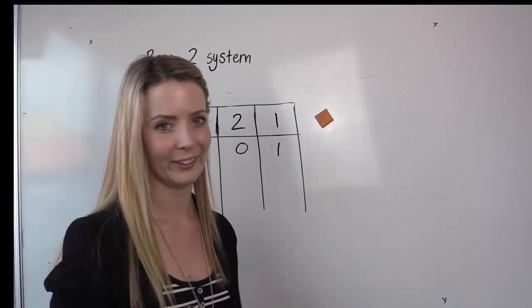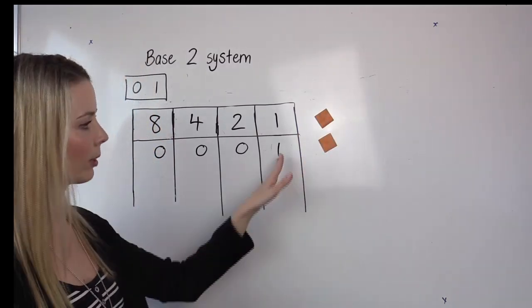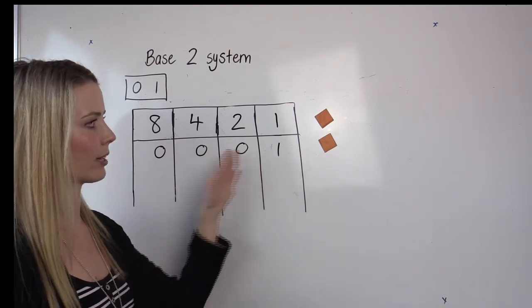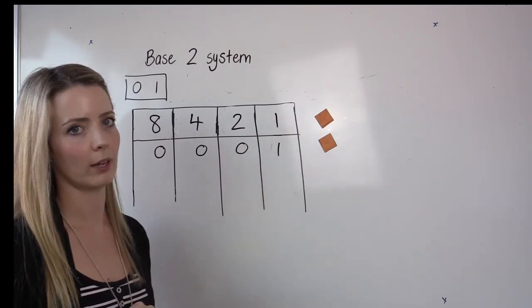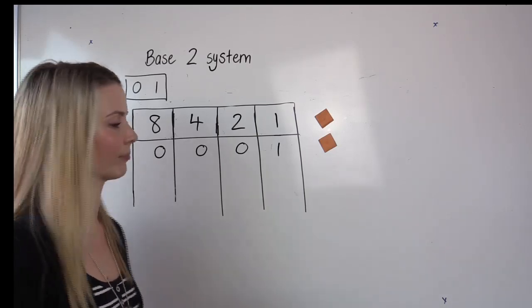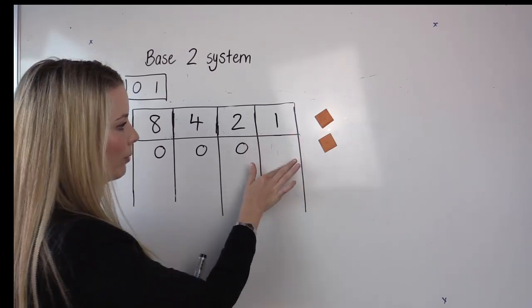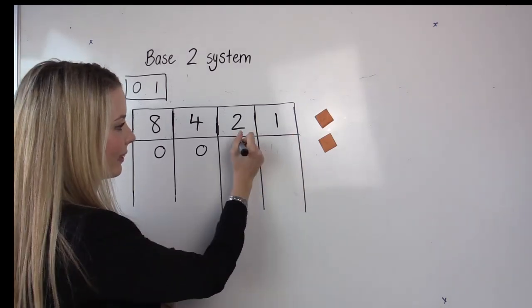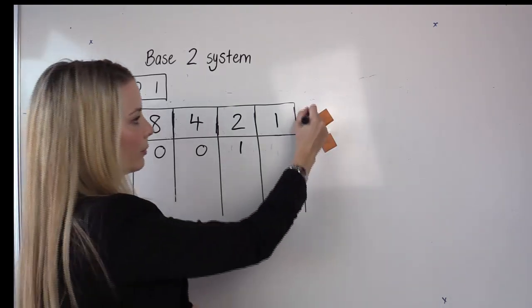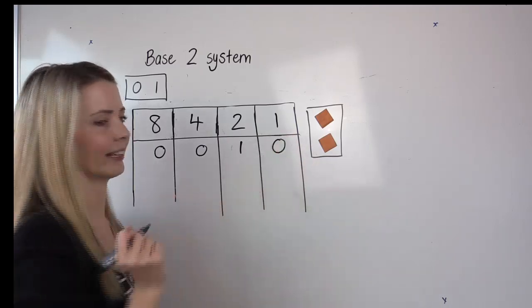Now if I add another object, I've got two, but I'm going to do what I did before with the base 10 system and transfer because I've only got one, one, and we're only working with a zero or a one here. So now we've got two. We're going to put a one here, indicating that we have one lot of two. And we're going to put a zero here.